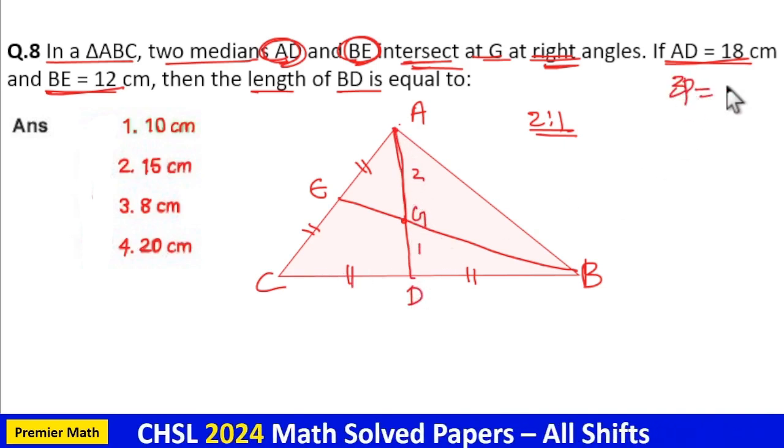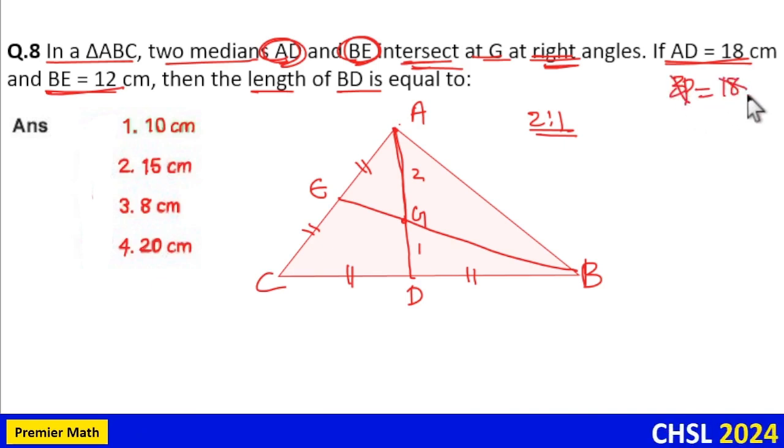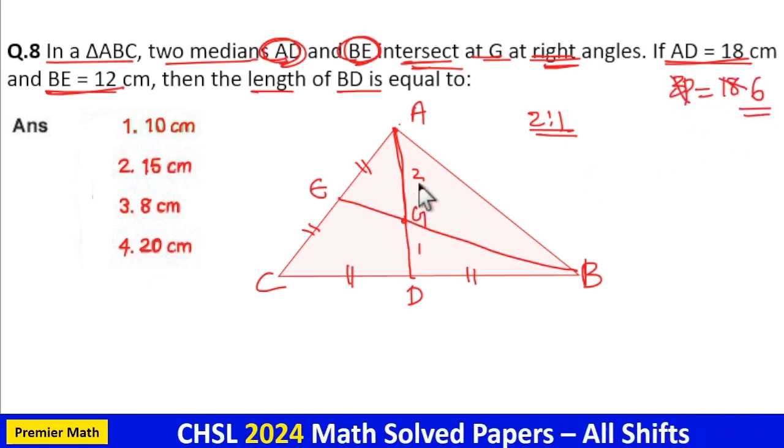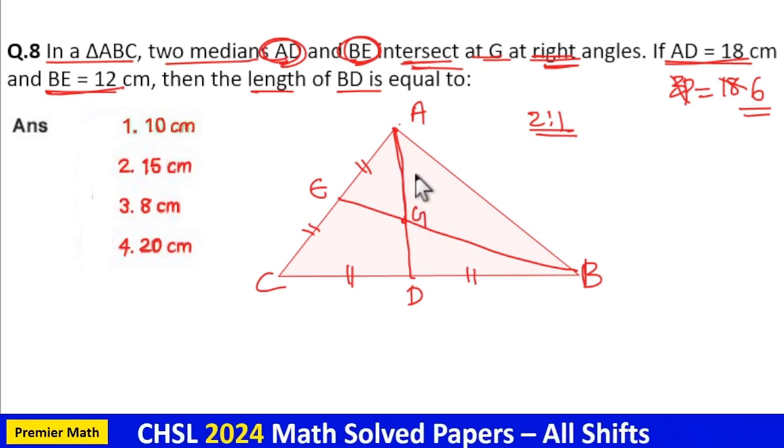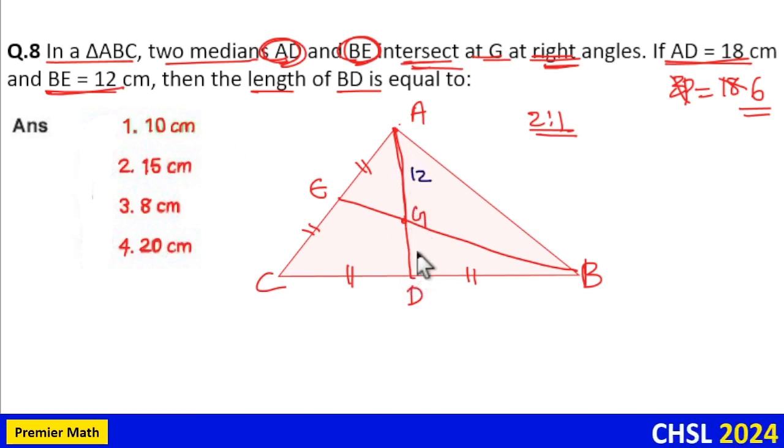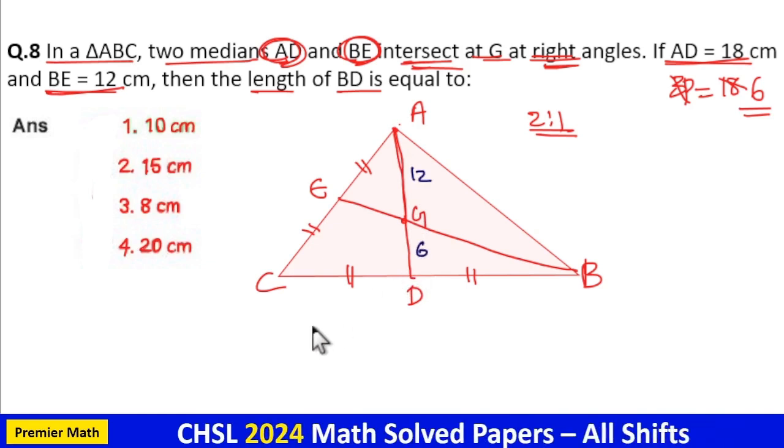AD is 3 parts means 3 parts equals 18. Then 1 part equals 6 cm. If 1 part is 6 cm, then 2 parts equals 2 into 6, which is 12 cm, and 1 part equals 6 cm.